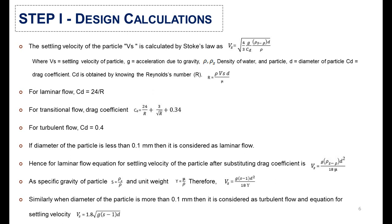In the first step, settling velocity of the particle is calculated by Stokes' law using this equation, where Vs is the settling velocity of the particle, G is the acceleration due to gravity, rho and rho-s are the density of water and the density of the particle, and Cd is the drag coefficient.